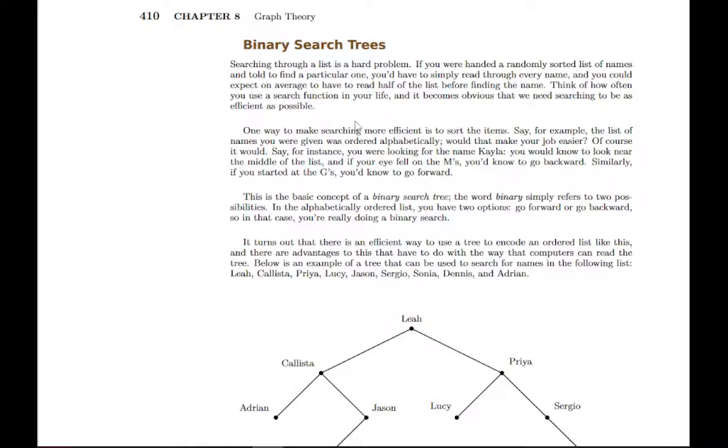We'll see two applications of this. One is called a binary search tree, an application that computer science students would see a lot. Basically, it relates to searching through a list. Think about how often you use search. If you want to find anything, there's Google searches or searching through files on your phone. We use searching all the time, so we need it to be really efficient.